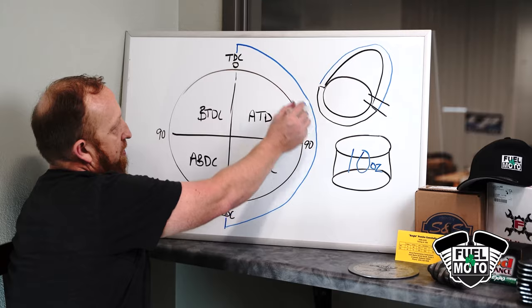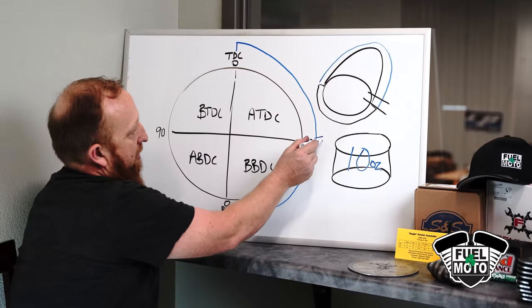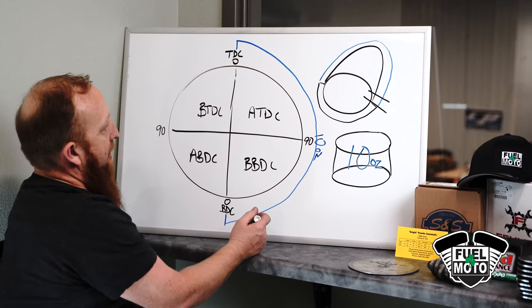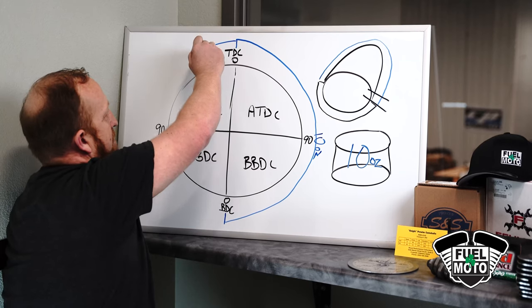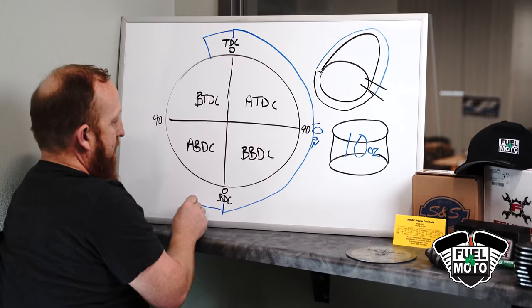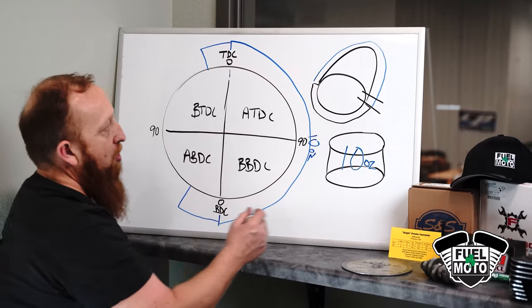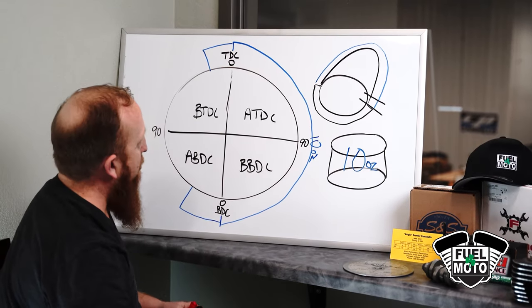So this duration of the camshaft would represent the 10 ounces of volume that you're going to fill. Now because your intake cam is open in before top dead center on valve overlap and closes in after bottom dead center, you can overfill your cylinder volumetrically.